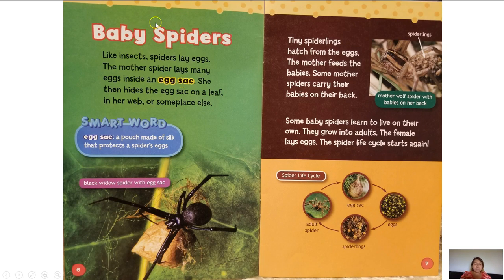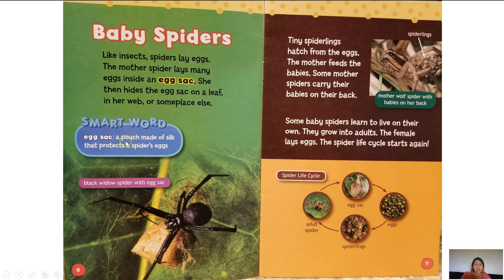Baby spiders. Like insects, spiders lay eggs. The mother spider lays many eggs inside an egg sack, then hides the egg sack on a leaf, in her web, or someplace else. Our smart word is egg sack: a pouch made of silk that protects a spider's eggs.